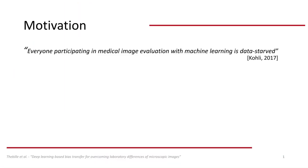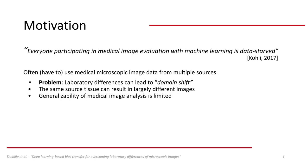Let's start with the motivation. As researchers working with medical images, this quote by Kohli Aal probably resonates with you: 'Everyone participating in medical image evaluation with machine learning is data-starved.' This predicament leads to a number of issues. A lack of adequate amounts of data often requires using medical image data from multiple sources. However, every laboratory slightly varies, be it the type of microscope or staining process they use. This causes something called domain shift, meaning that the same source tissue can lead to largely differing images, which can affect the generalizability of our medical image analysis.